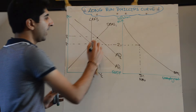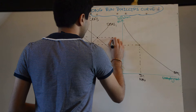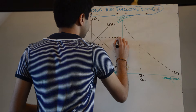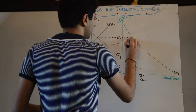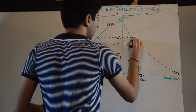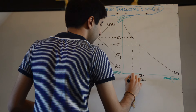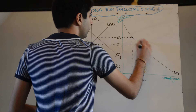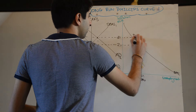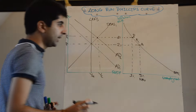With AD shifting to the right, we know that there is going to be an increase in inflation — let's say to three percent — and a reduction in unemployment — let's say to three percent also. So we move up the curve from point A to point B.